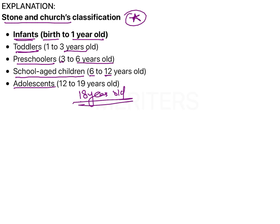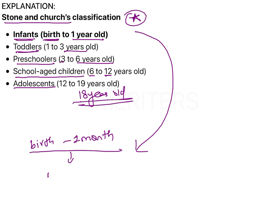Although in Stone and Church's classification infants are classified from birth onwards, there are certain other classifications in which the time period from birth to one month — that is the first month after birth — the child is known as a neonate or a newborn. This is also important because it could be asked in the exam.